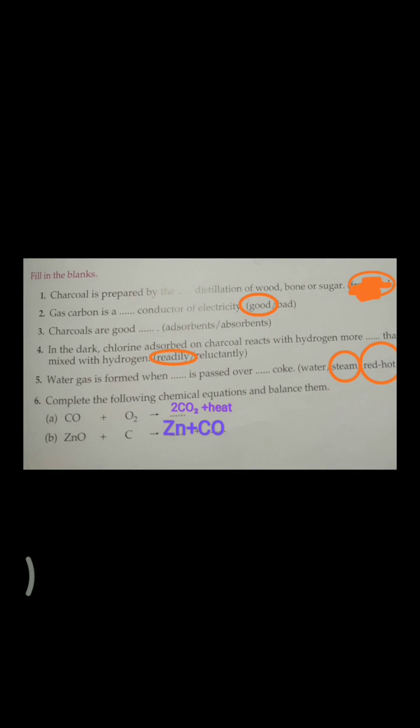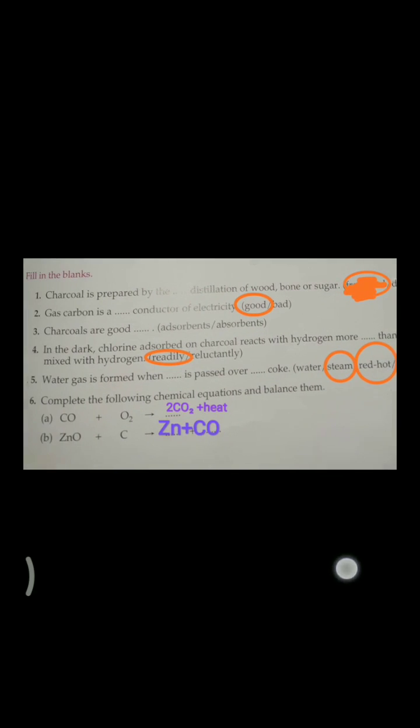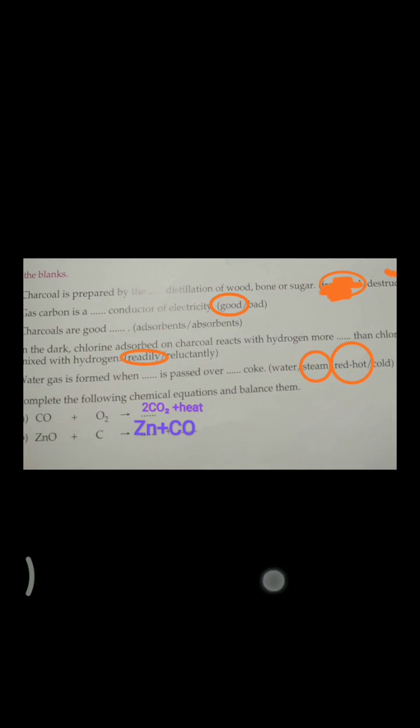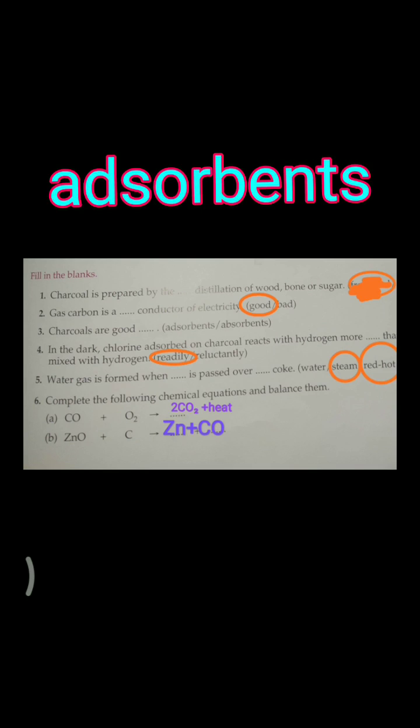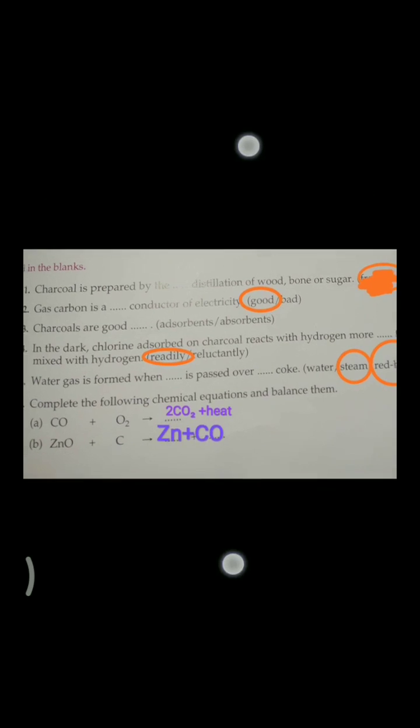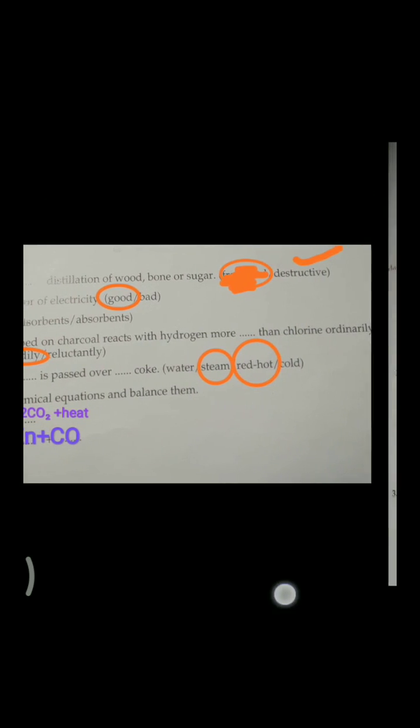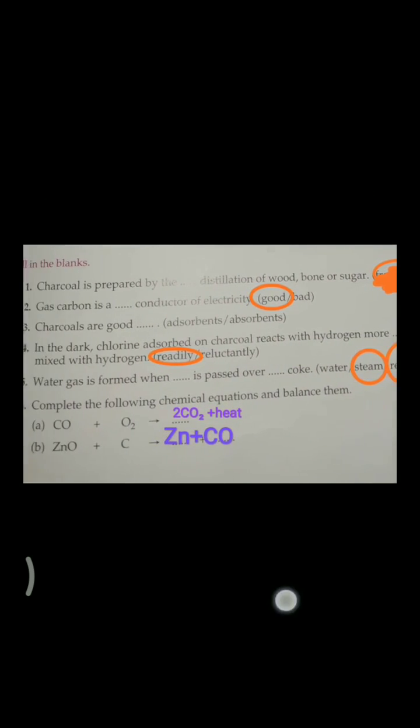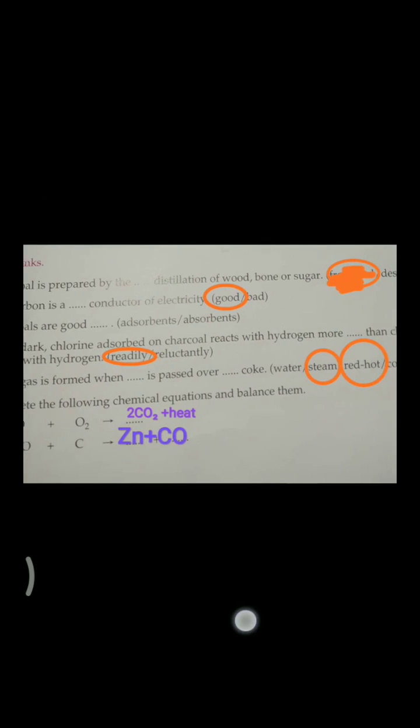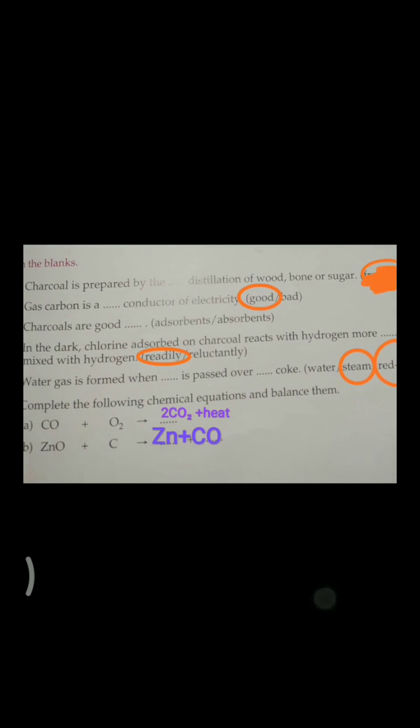Fill-ups. Charcoal is prepared by the destructive distillation of wood, bone or sugar. Second, gas carbon is a good conductor of electricity. Charcoal is a good adsorbent. Fourth, in the dark, chlorine adsorbed on charcoal reacts with hydrogen more readily than chlorine ordinarily mixed with hydrogen. Fifth, water gas is formed when steam is passed over red hot coke.